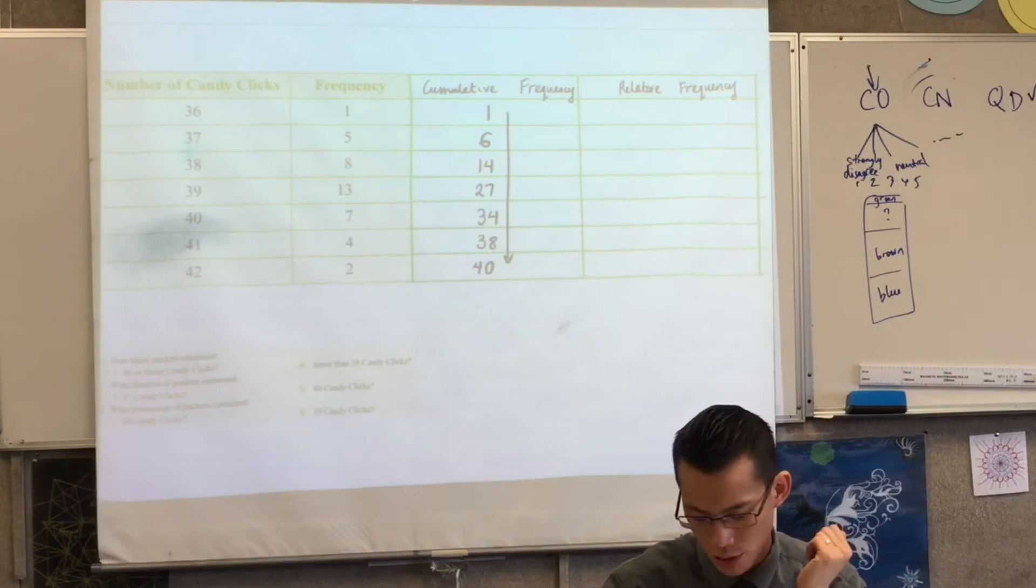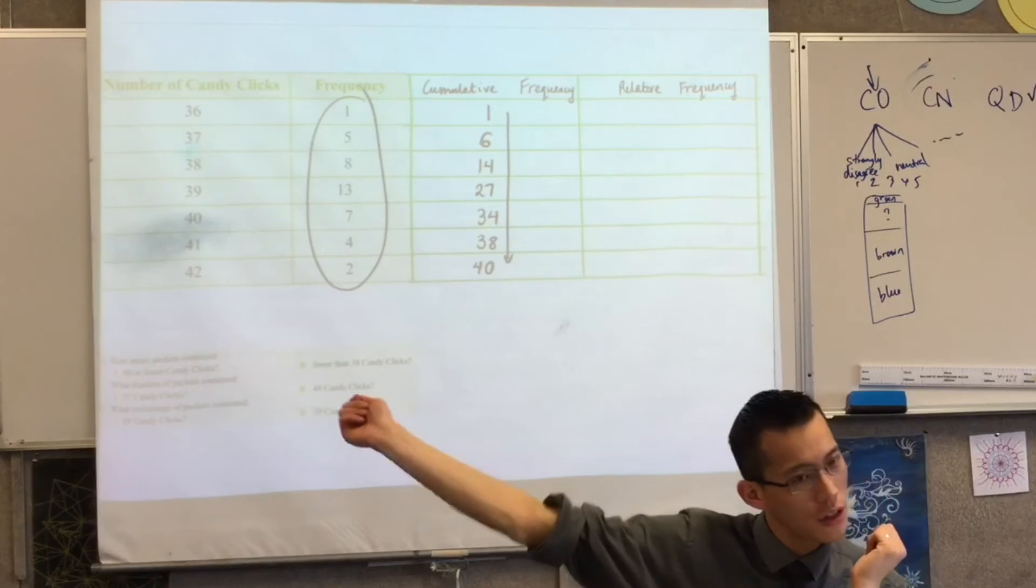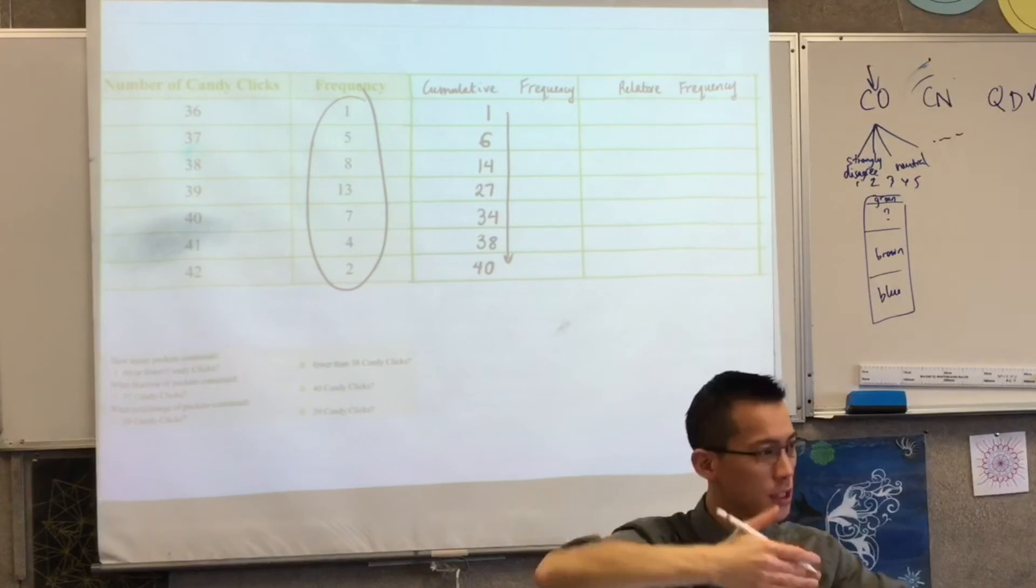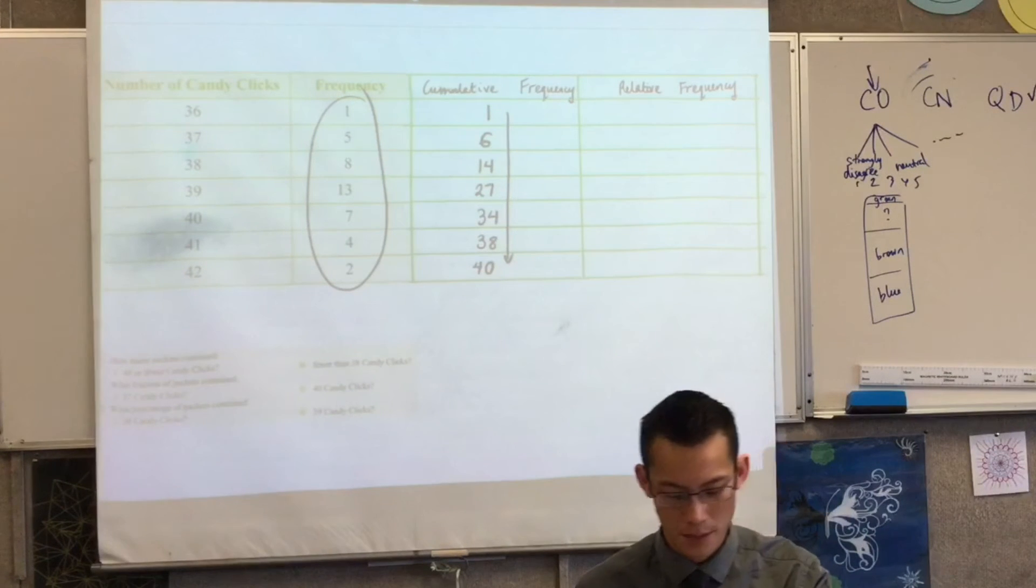Now how does that relate to these numbers over here? Well those numbers on the left are the ones which is like the differences between those, okay? So all I've done to get the column on the right is to add up those differences.